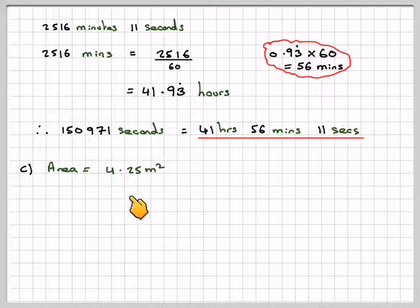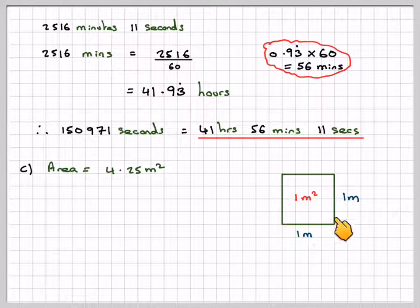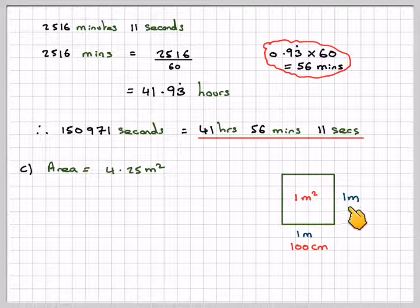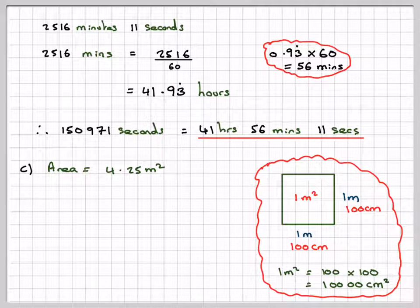Right, last part — area, 4.25 metres squared. The confusion here is that people say 1 metre squared is equal to 100 centimetres squared, and that's not true. If you draw a square which is 1 metre squared, that comes from doing 1 metre times 1 metre. But 1 metre is 100 centimetres, so 1 metre squared is 100 times 100, which gives me 10,000 centimetres squared.